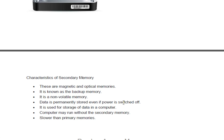Data is permanently stored even when the power is switched off. Secondary memory is used for storage of data in a computer. A computer may run without secondary memory — if there is no hard disk or secondary memory, you can still run the computer once it has booted up, working with RAM only. However, at the time of starting the computer, secondary memory is needed. Secondary memory is slower than primary memory.